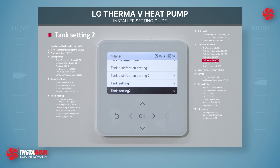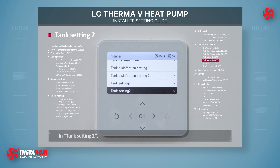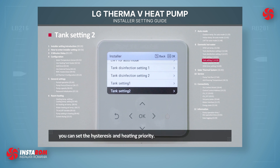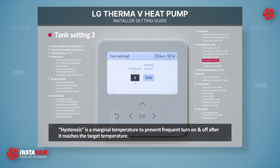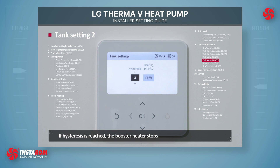Tank setting number 2. In tank setting number 2, you can set the heat statuses and heating priority. Heat statuses is a marginal temperature to prevent frequent turn on and off after it reaches the target temperature. If heat statuses is reached, the booster heater stops.